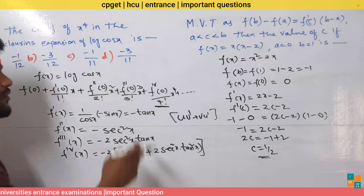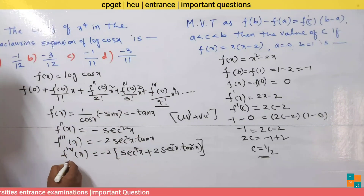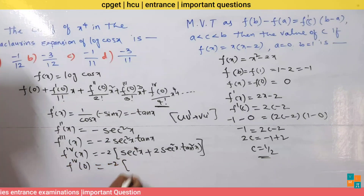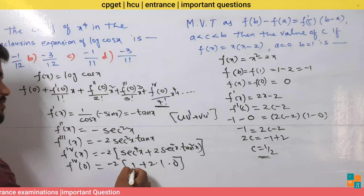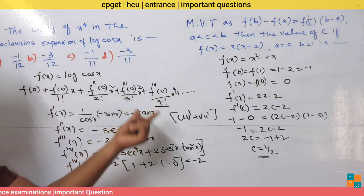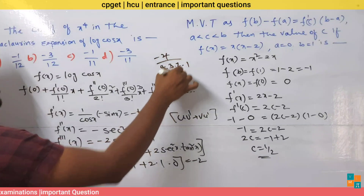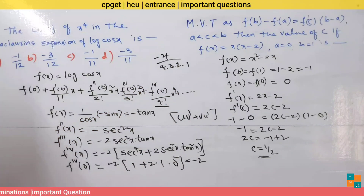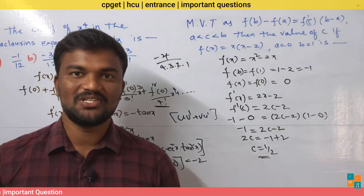Substituting x equals 0: sec(0) equals 1 and tan(0) equals 0, so f''''(0) equals −2·(1)⁴ + 2·(1)²·(0)² equals −2. The coefficient of x⁴ is f''''(0)/4! equals −2/(4·3·2·1) equals −2/24 equals −1/12. So the answer is option A: −1/12. In the next video we will discuss more important problems of CPJET entrance examination. Thank you.